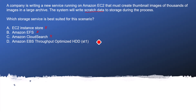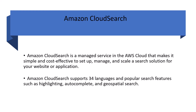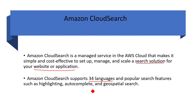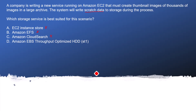Option D is Amazon EBS Throughput Optimized HDD — this looks correct to me. Before that, let me briefly cover Amazon CloudSearch: it is a managed AWS service that makes it simple and cost-effective to set up, manage, and scale a search solution for your website or application. It supports 34 languages and features like highlighting, autocomplete, and geo-spatial search. It is not a storage service, so it is marked wrong for this question.